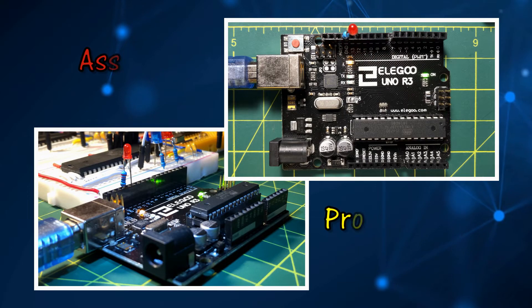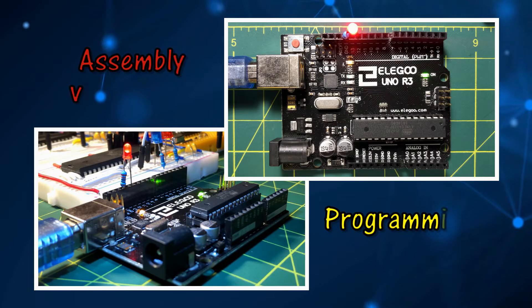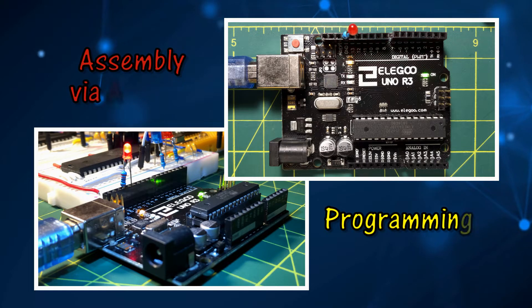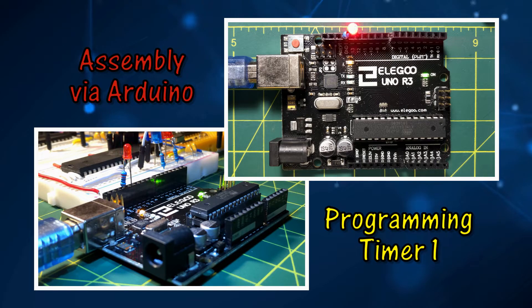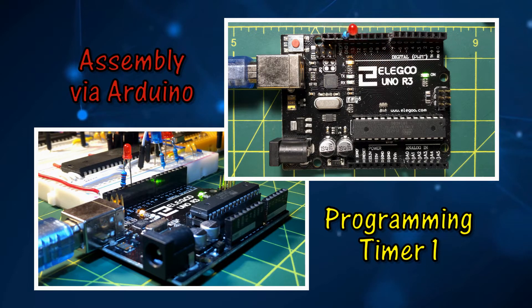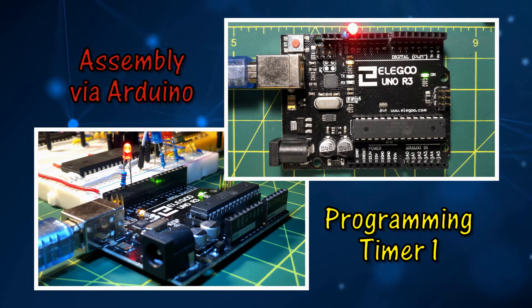In my previous video, 8-bit Timer 0 was programmed using assembly to introduce time delay. In this video, 16-bit Timer 1 is programmed to give different time delays with up to 4 seconds delay.